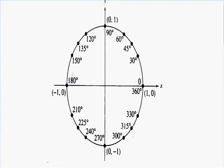At this point most of you are probably familiar with degrees. But unfortunately in trigonometry many times the angles are expressed in units of radians. So how do we convert all of these angles into radians? Every 30 degrees is pi over 6 radians, and we can use this information to convert every 30-degree angle into radians.